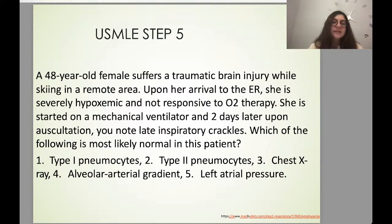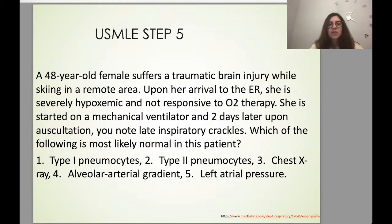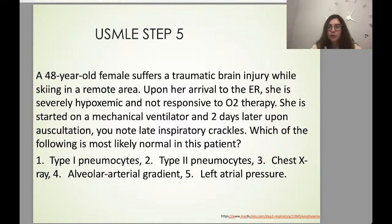Test 5: A 48-year-old female suffers a traumatic brain injury in a remote area. On arrival to the ER she is severely hypoxemic and non-responsive to oxygen therapy. She is started on mechanical ventilation, and two days later on auscultation you note late inspiratory crackles. Which of the following is most likely normal in this patient? (1) Type 1 pneumocytes; (2) Type 2 pneumocytes; (3) Chest X-ray; (4) Alveolar-arterial gradient; (5) Left atrial pressure. A difficult question — try to work with the information from the lecture.